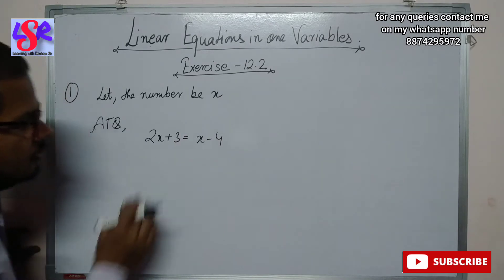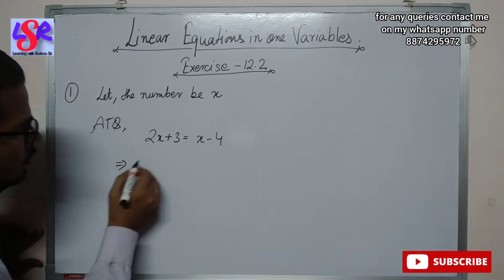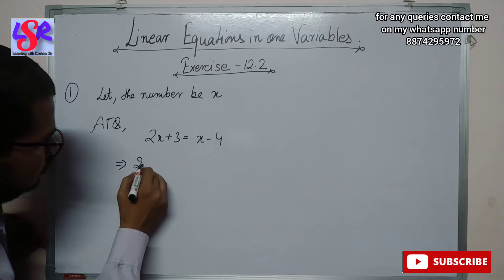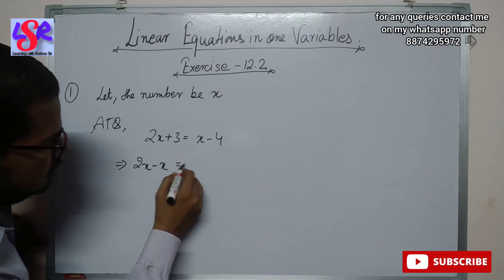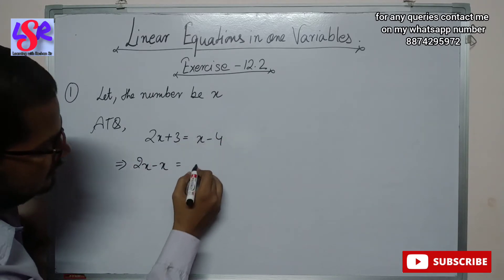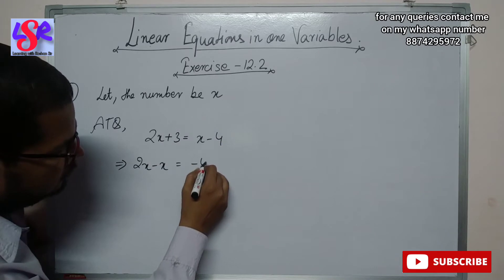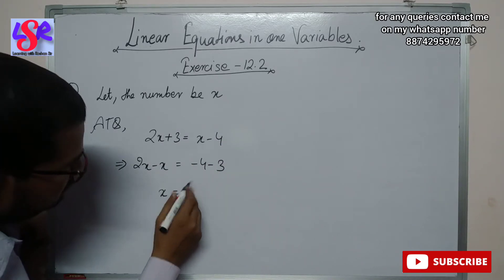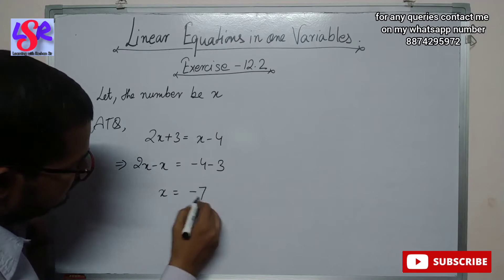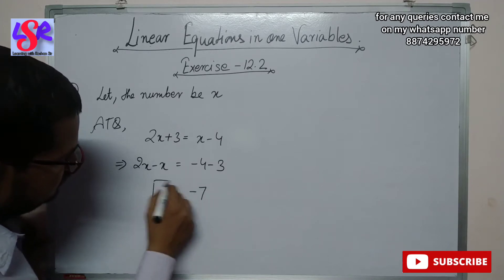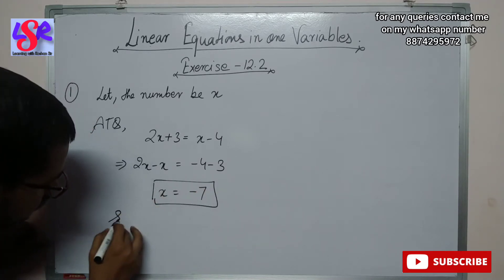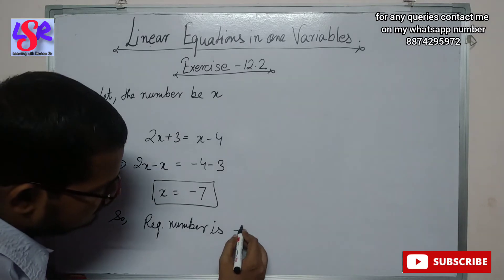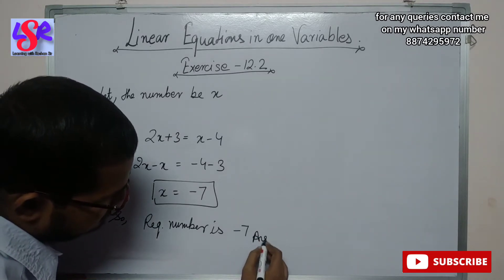Now we're going to solve for x by doing a transpose. This will become 2x minus x equals to minus 4 minus 3. So 2x minus x will be x, and minus 4 minus 3 will be minus 7. So the required number is minus 7 as the answer.